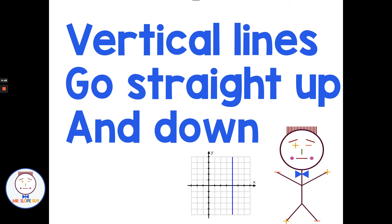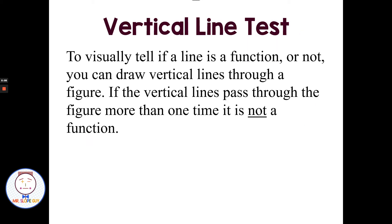Now everybody remembers vertical lines — vertical lines are the ones that go straight up and down. In order to tell if we have a function from a graph, instead of listing all the points, we have what's called the vertical line test. The vertical line test will tell us if we have a function without listing every single point. To visually tell if a graph is a function or not, you can draw vertical lines through a figure. If the vertical line passes through the figure more than one time, it is not a function.